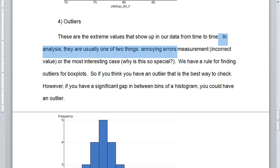Really annoying errors of measurement. Just an incorrect value. I put 500 pounds instead of 50 pounds for the poodle. Or the most interesting case, why is this value so different from the rest? Why is it so special? Why is this poodle so overweight? Why is this poodle so underweight? Why is this student's height so much taller? What's special?